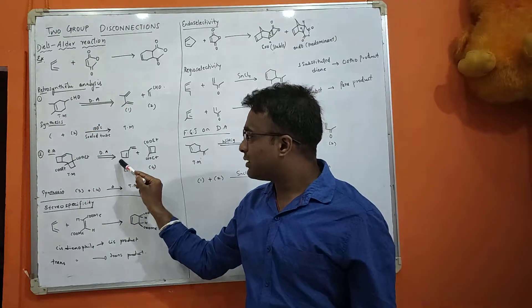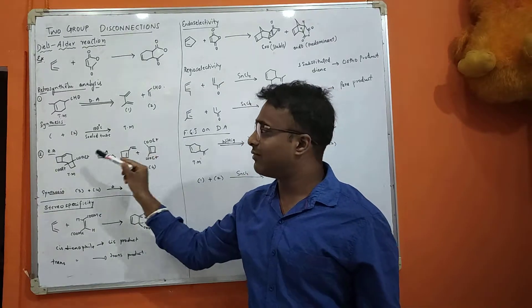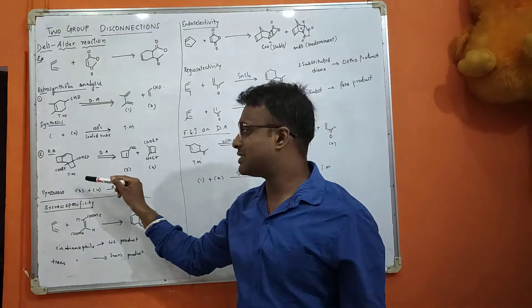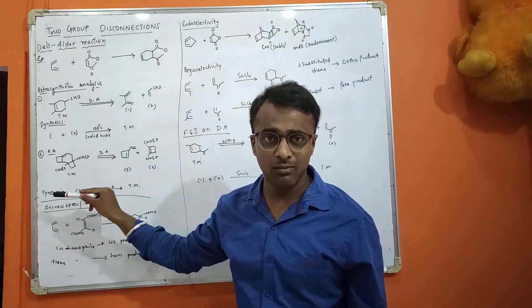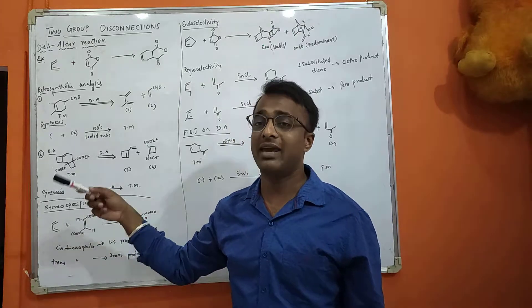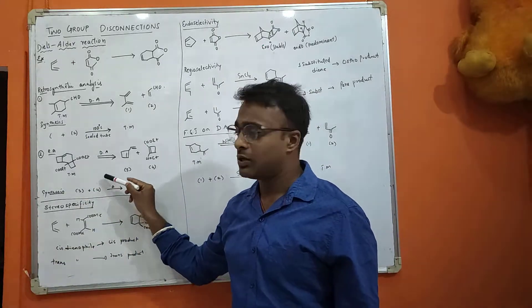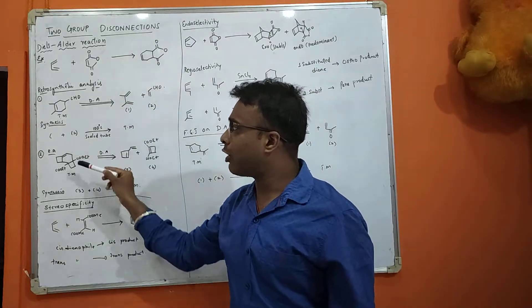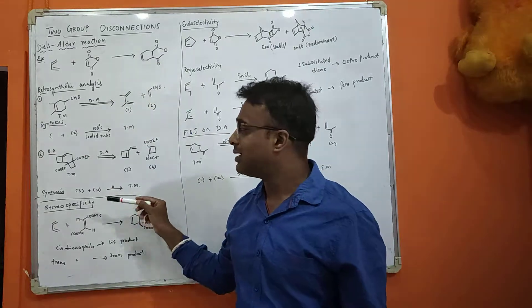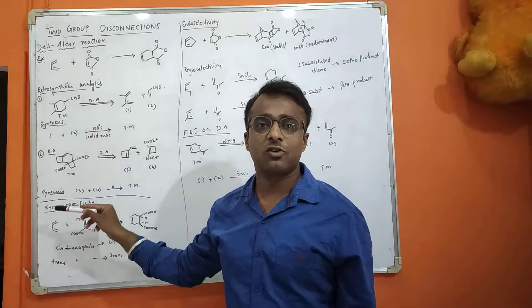This will give you diene and dienophile, and the synthesis is also very easy because it has two electron withdrawing groups. Any cyclohexene molecule which contains an electron withdrawing group will make that synthesis easy. So we can do retrosynthetic analysis very easily. Now this is not enough for five marks. You also need to explain the stereochemistry of the reaction. The first one is stereospecificity.